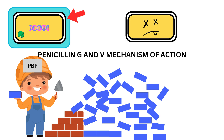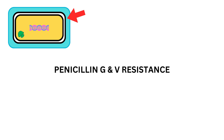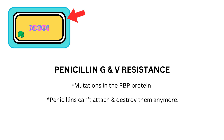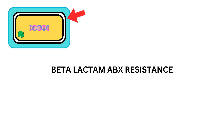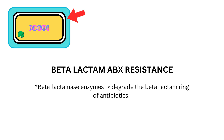Some bacteria evade this attack by mutating themselves. Mutations in the PBP protein will prevent penicillins from attaching to them and destroying them. Bacteria can also produce beta-lactamase enzymes to degrade the beta-lactam ring of beta-lactam antibiotics. This resistance mechanism is one of the most common ways bacteria evade these drugs.